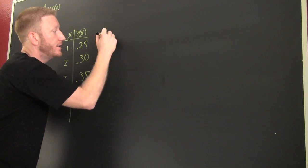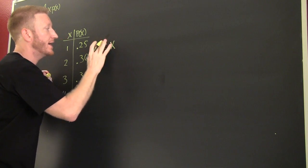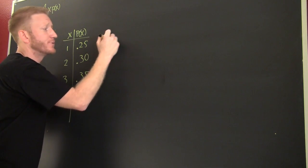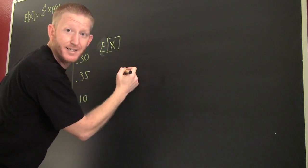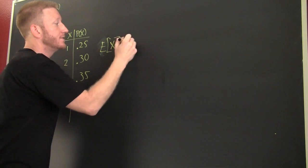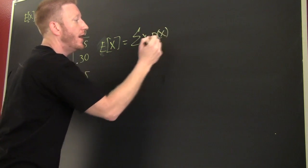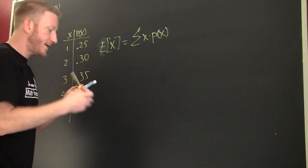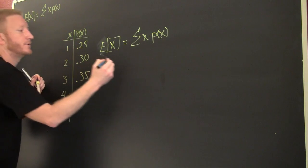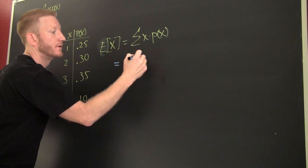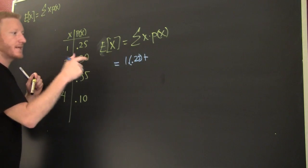Let's find that. So I know that my expected value of x, my sum of x*p(x). That literally says take this one times that one: 1 times 0.25, plus this one times that one: 2 times 0.30.